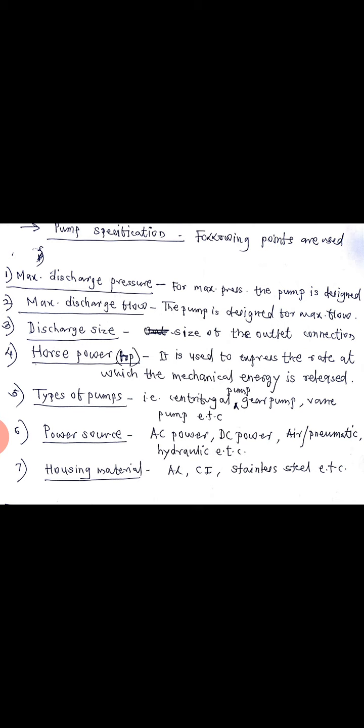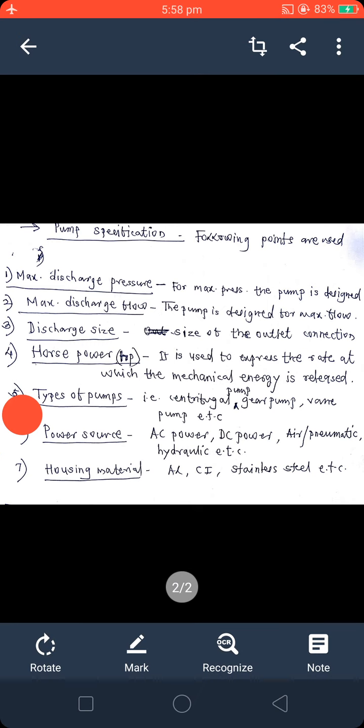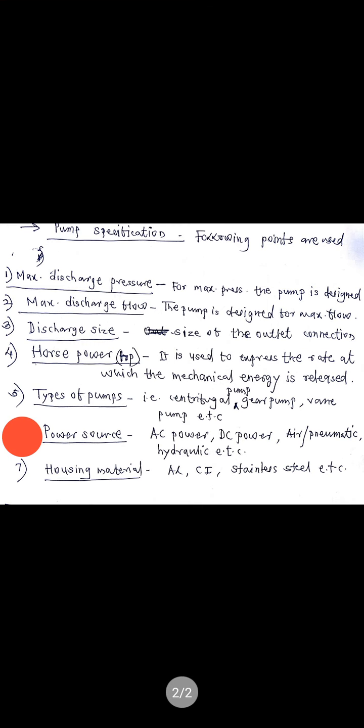Next is horsepower. It is used to express the rate at which mechanical energy is released. We consider pump capacity as 1 HP, 2 HP, 3 HP, and so on. Then types of pumps - centrifugal pump, gear pump, vane pump, etc.